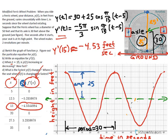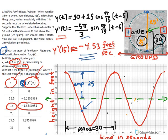Looking at the graph from Part A, at t = 15 seconds the graph is falling from left to right — the function is decreasing at that time, which is why the derivative is negative. The height is decreasing at a rate of about 4.5 feet per second.